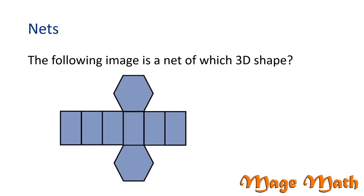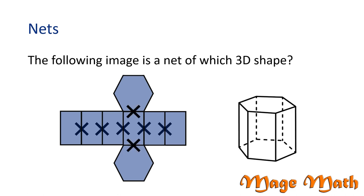Let's try this problem. The following image is a net of which 3D shape? This net is made up of two hexagons, which is a type of polygon that has six sides, and the net also has six rectangles. If we fold along these marked lines, the figure will fold into a type of prism.